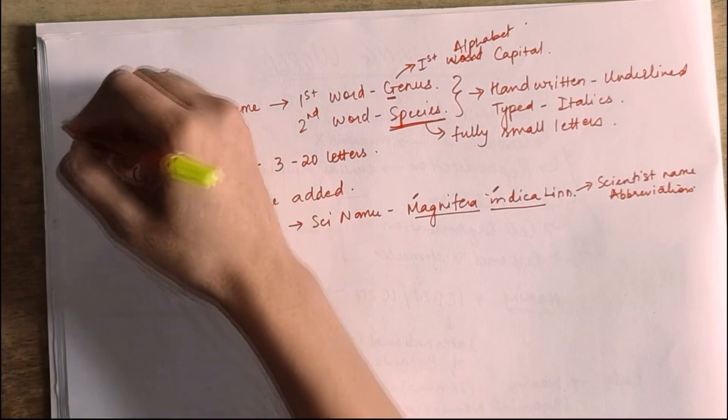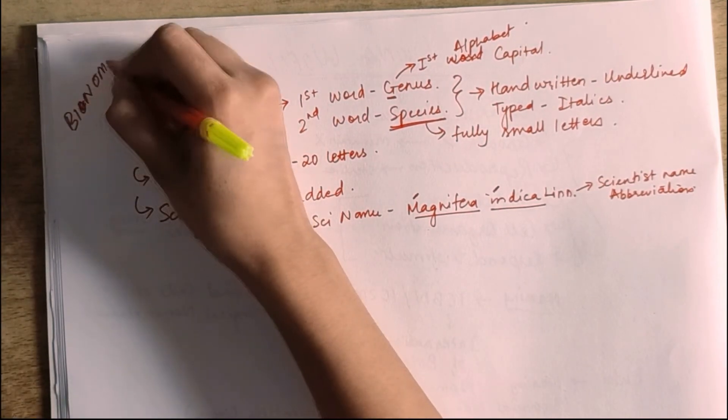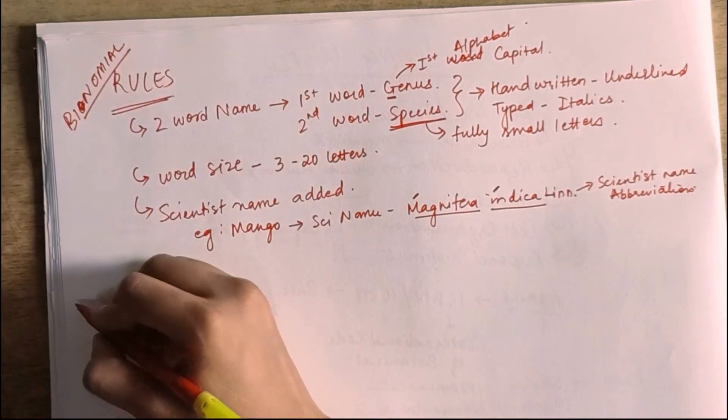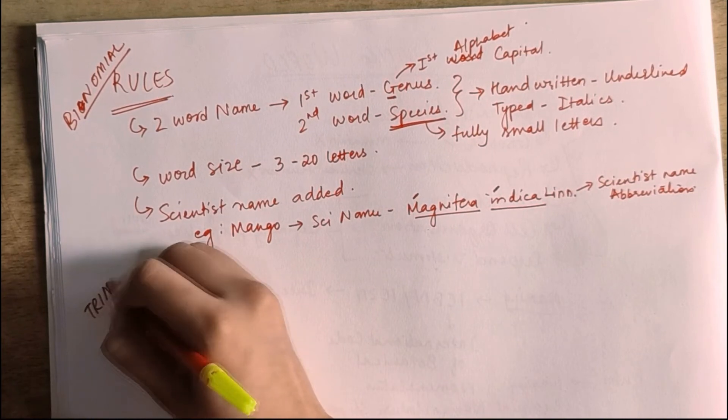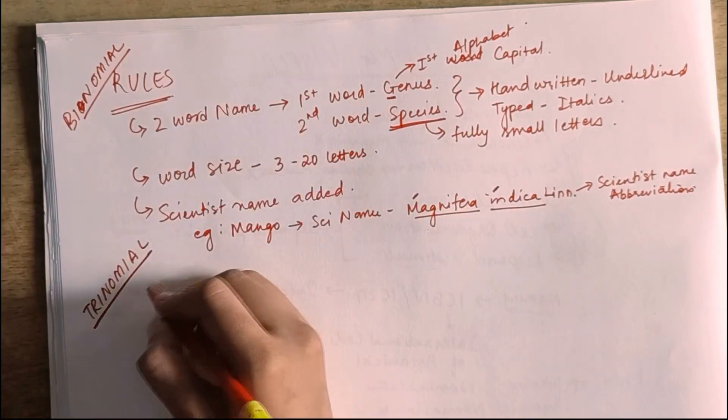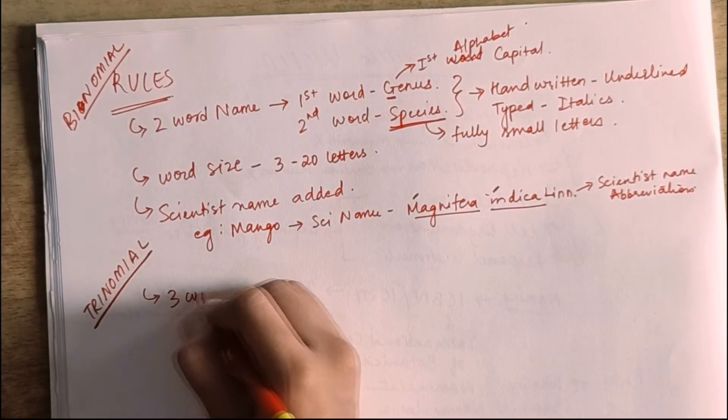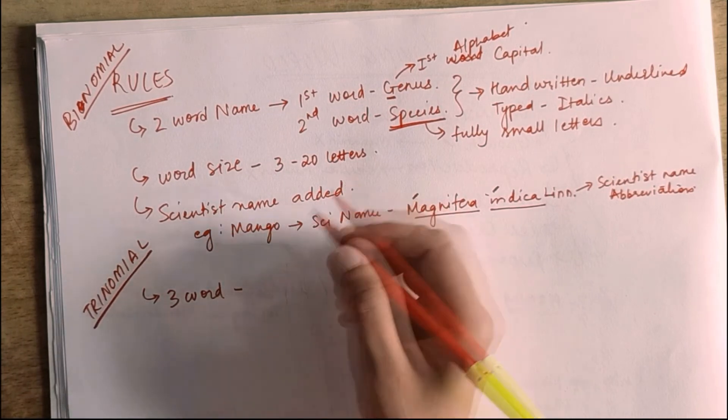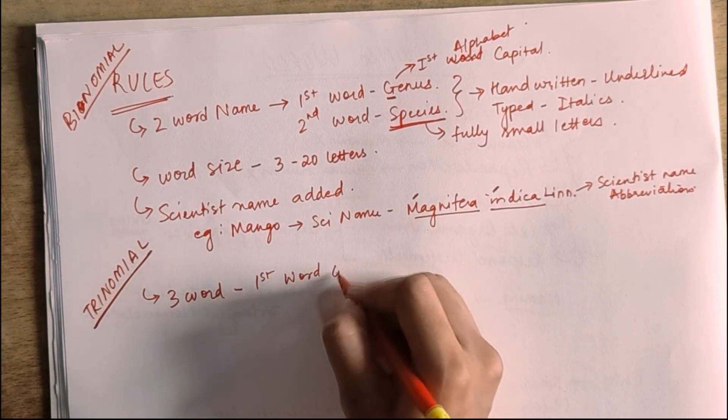Now, with binomial nomenclature, there is another system that follows - trinomial nomenclature system. In this, there are three names instead of two. In the same way, first word is genus.